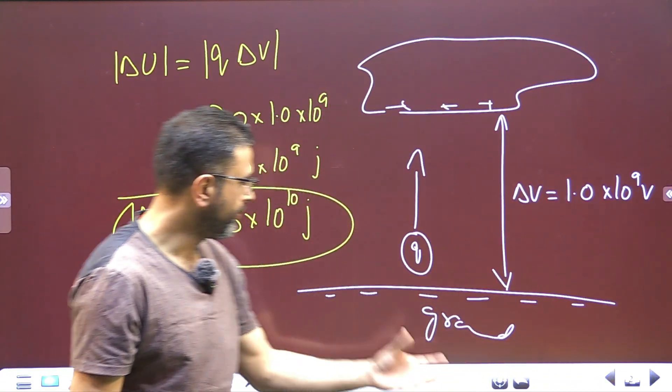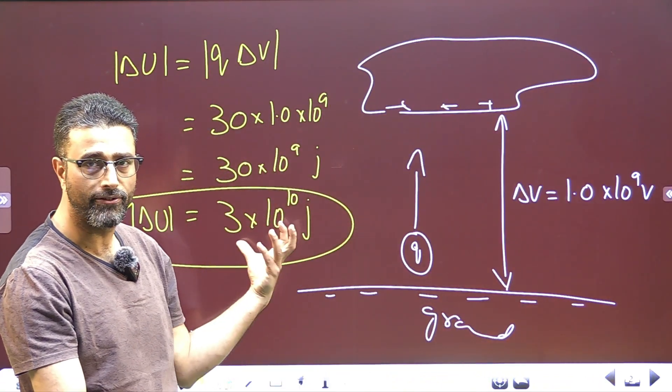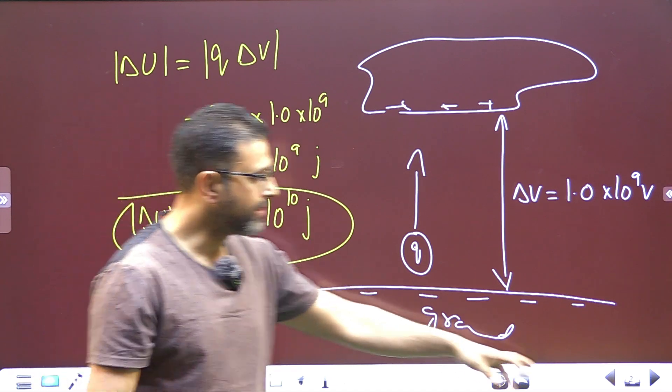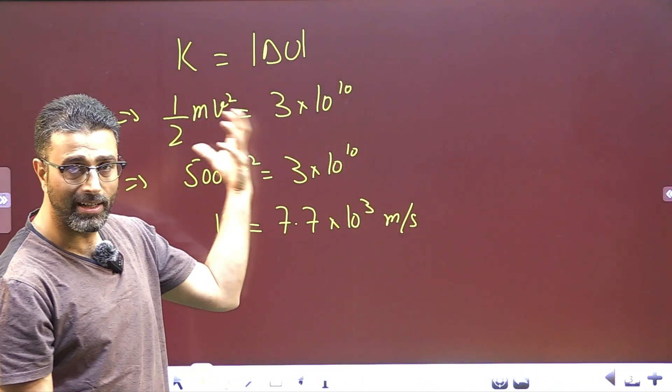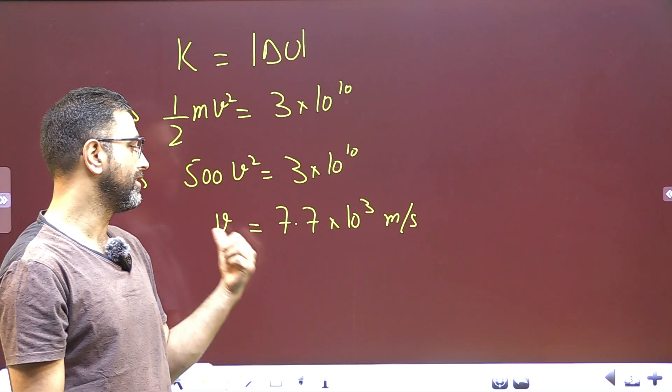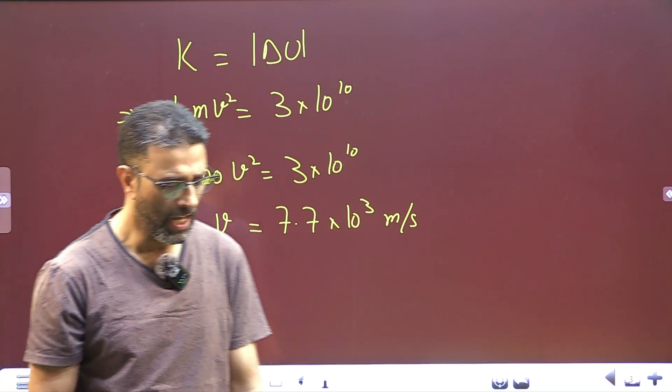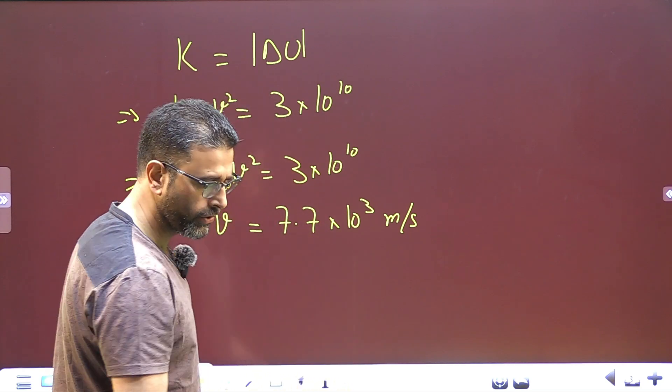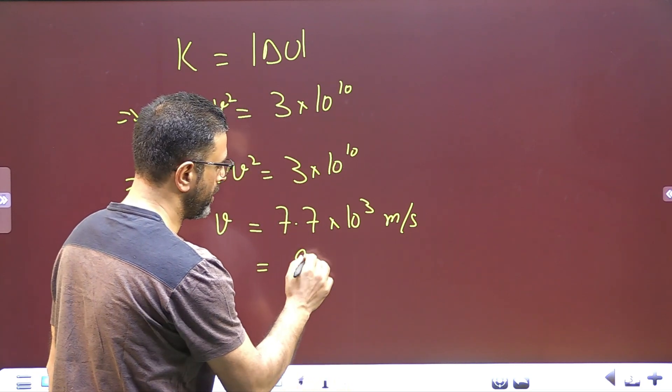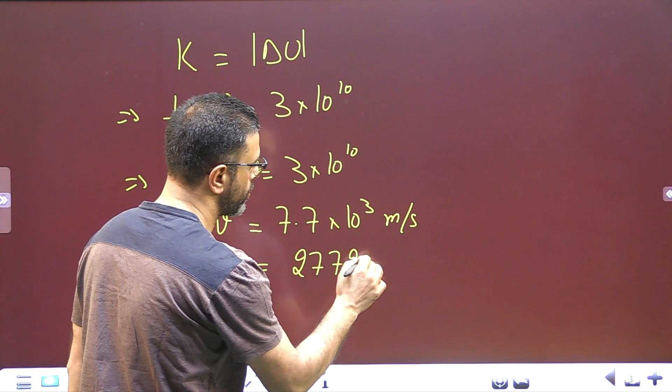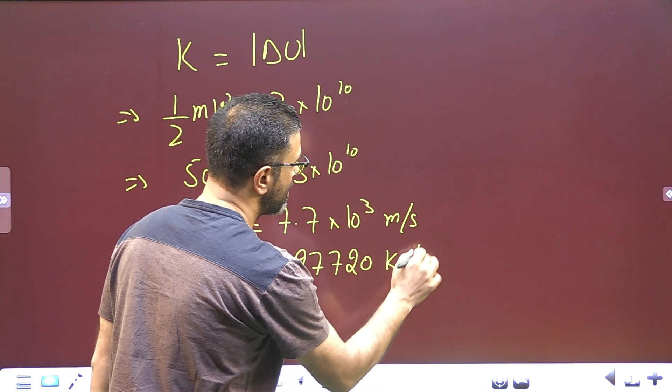So, if all this energy, if all this energy in this lightning flash is utilized to accelerate this car, 1000 kg car, then the speed of the car will be 7.7 into 10 to the power 3 meters per second, which is huge. If we convert it to kilometer per hour, it comes out to be 27,720 kilometer per hour. That is huge.